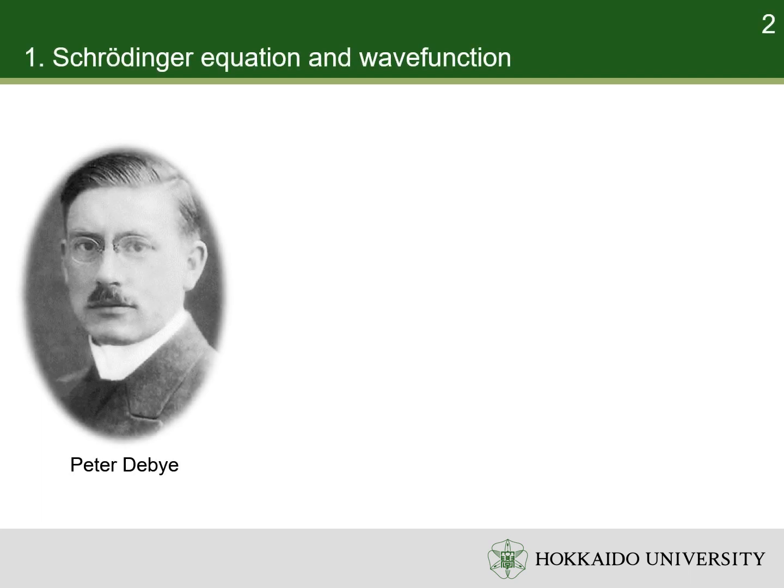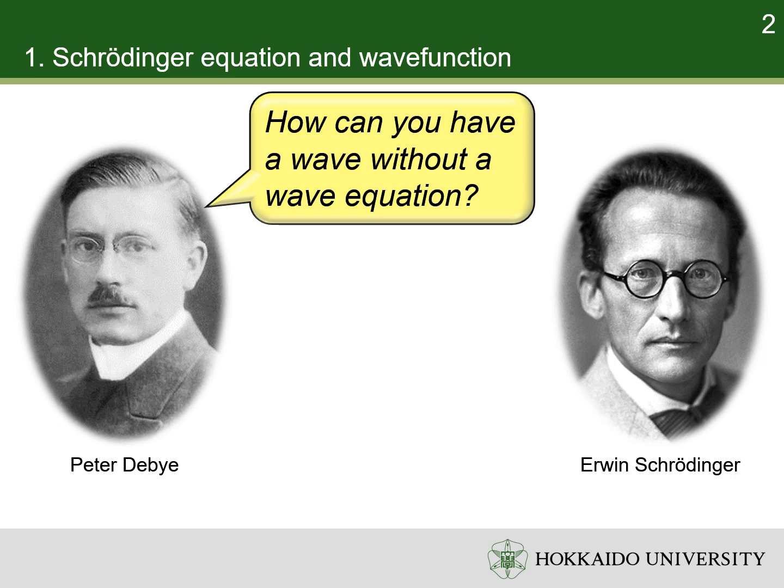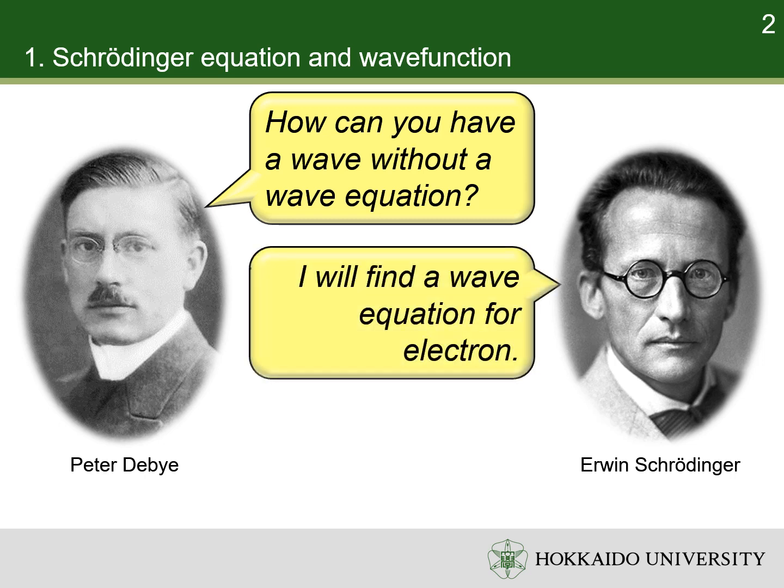Following up on de Broglie's ideas of matter wave, Peter Debye made an offhand comment that if a particle behaves as a wave, it should satisfy some sort of wave equation. Inspired by Debye's remark, Schrödinger decided to find a proper wave equation for electron.